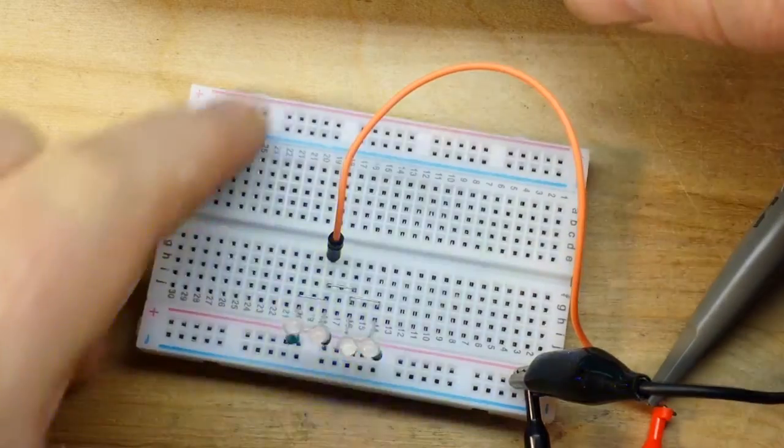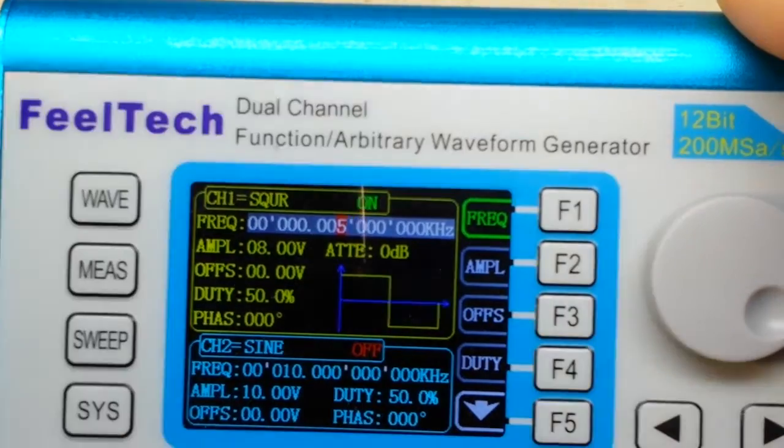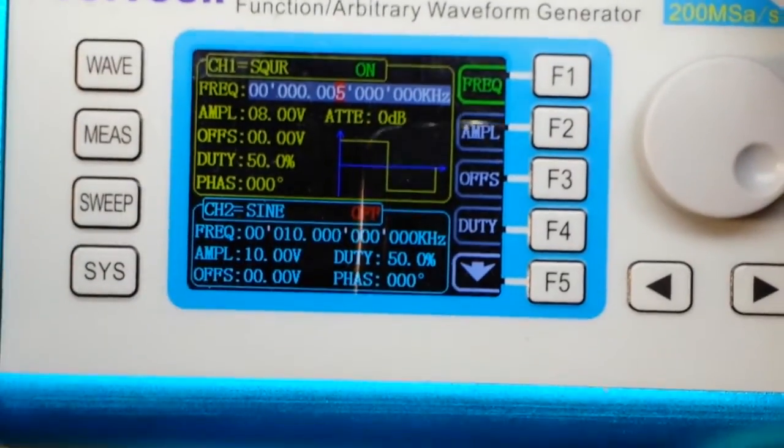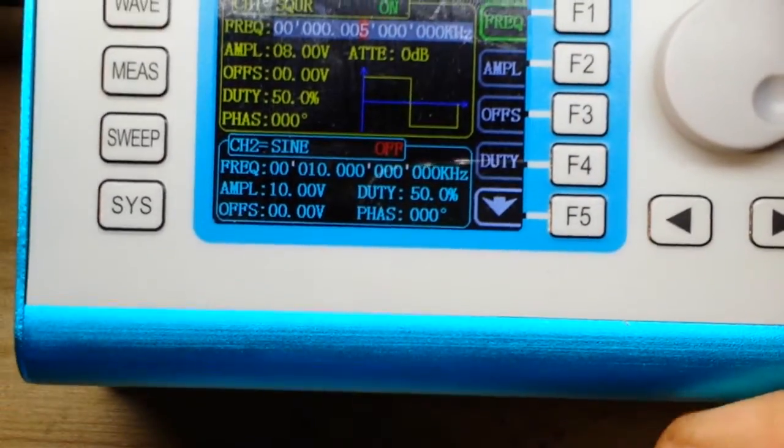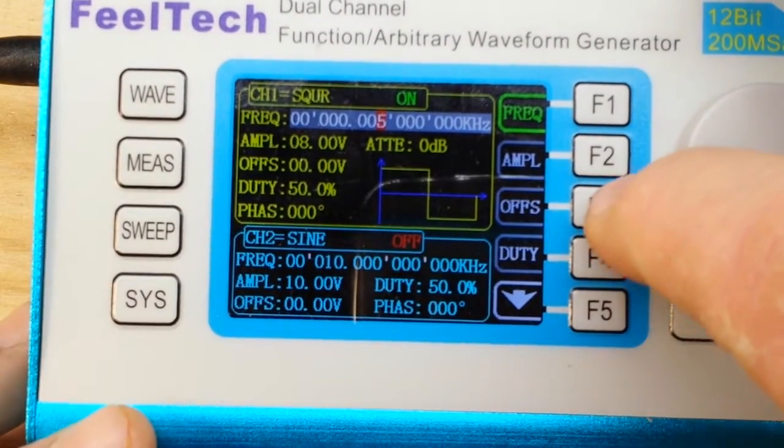Now the next thing that we want to look at is the duty cycle. Down here you can see it is set for 50%. Now if we change that duty cycle,